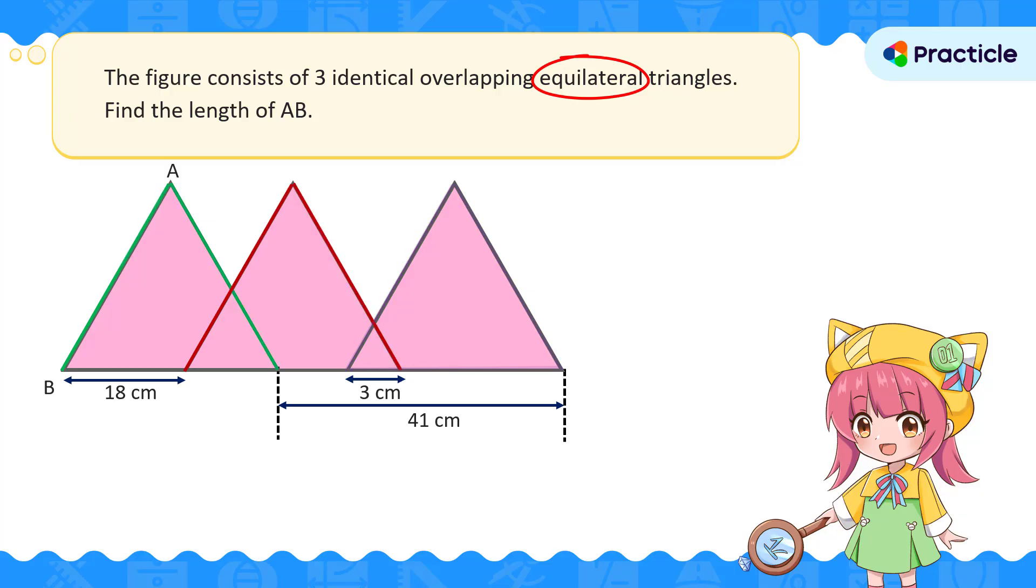Every side is the same. So, if we can find the length of one side, we'll know the length of all the other sides, including AB.